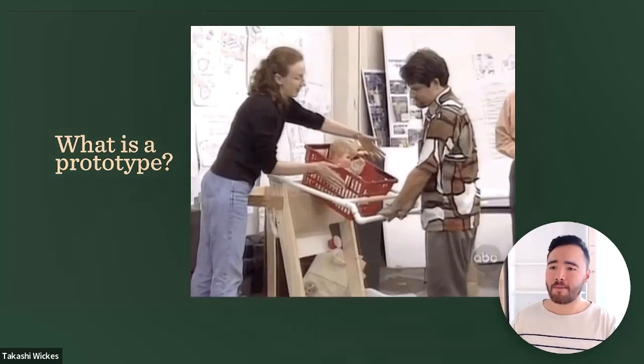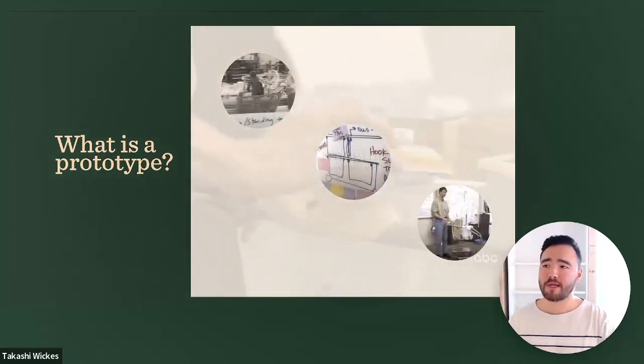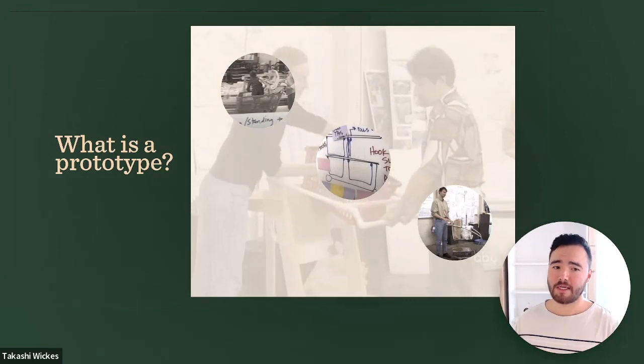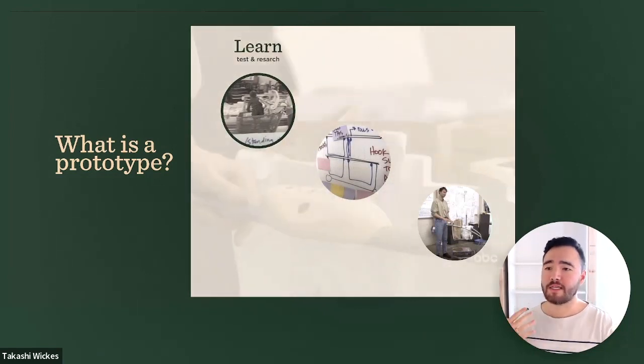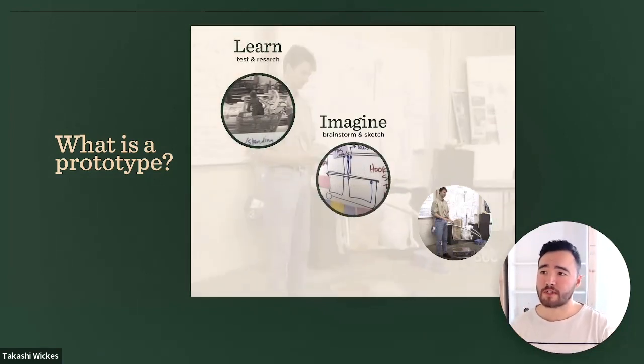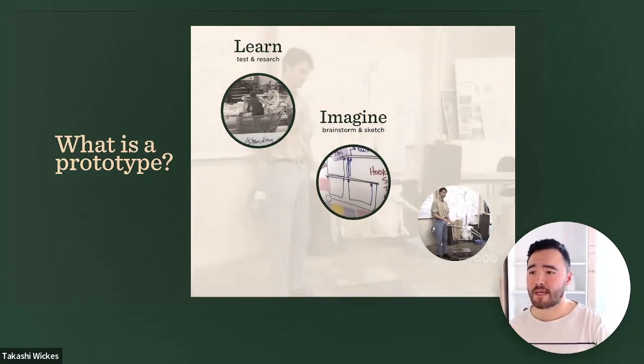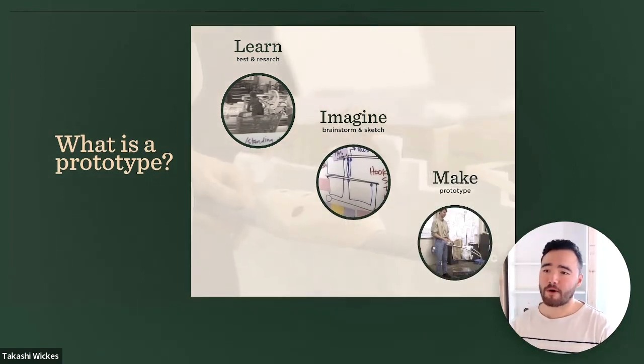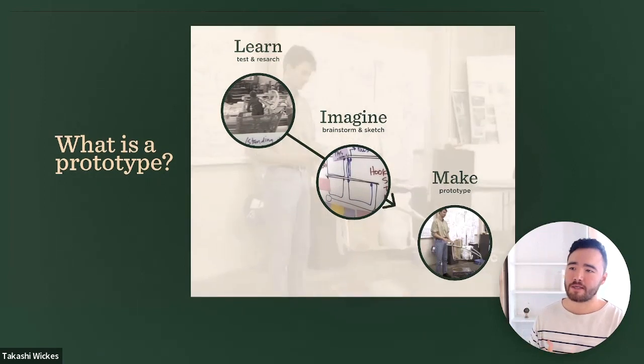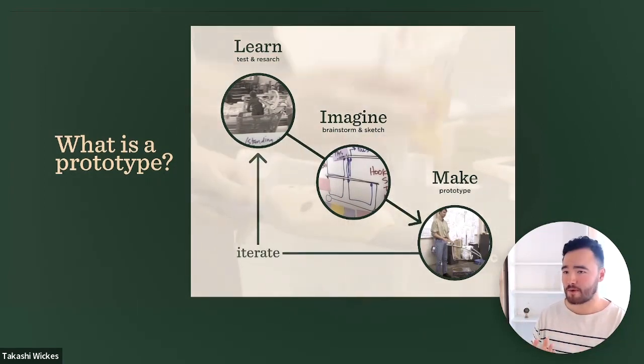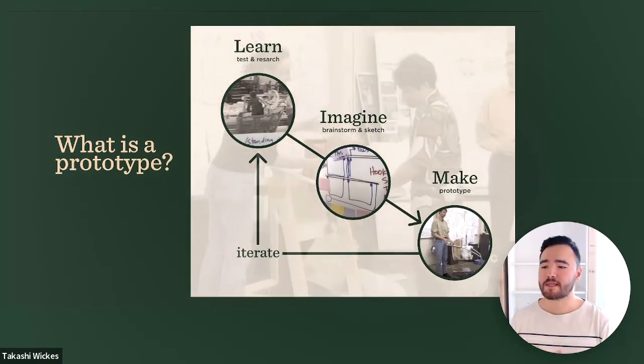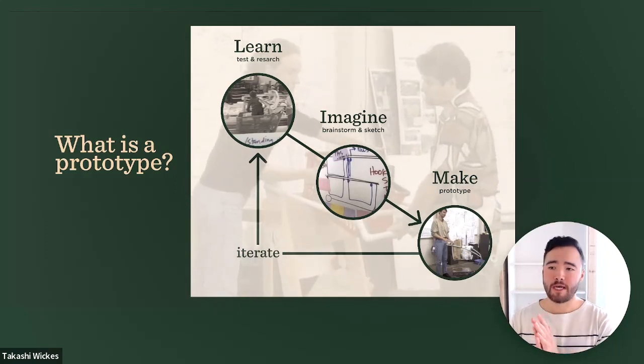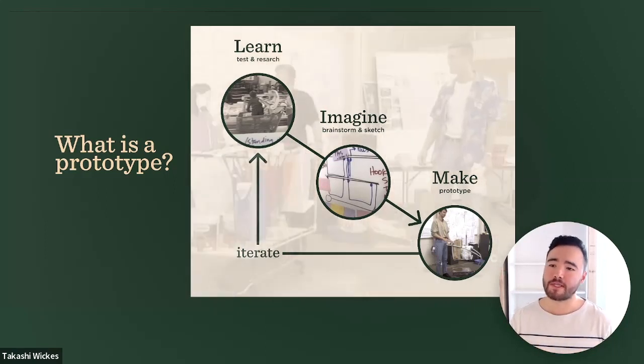But then if you watch the video as well, it breaks down well the design thinking process into kind of a simple way of this idea of learning. So testing and research, imagining, brainstorming, and sketching, and then making for prototyping. And actually across these different phases, which you repeat, which is kind of the classic design thinking process, prototyping shows up in different ways throughout these different areas.